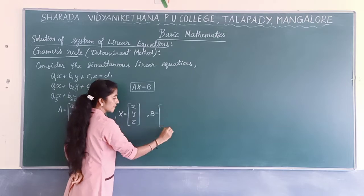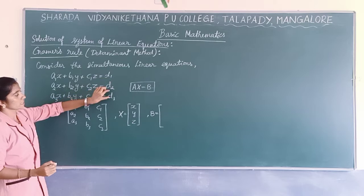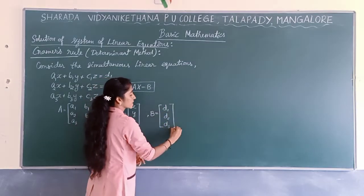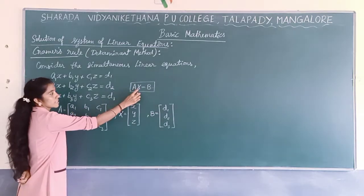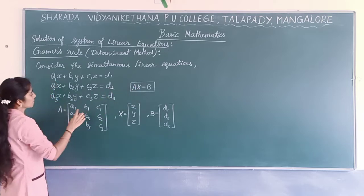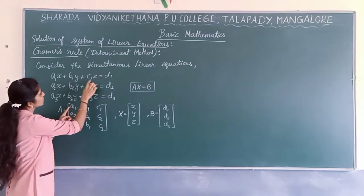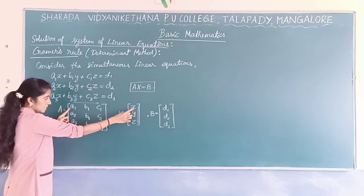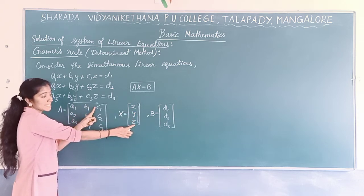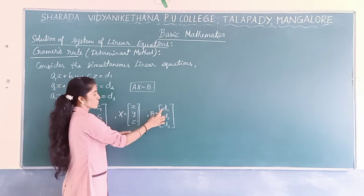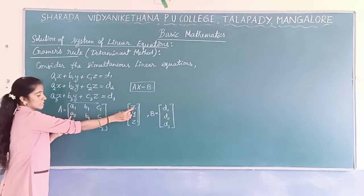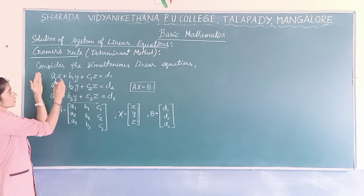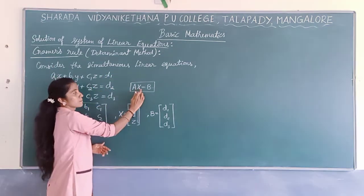Matrix B is written using the elements on the right-hand side of the equations — it is a column matrix. When matrix A is multiplied by matrix X, we get the first equation: A1X plus B1Y plus C1Z equals B1. Similarly we get the second and third equations. So this whole system of linear equations can be written as AX equals B.